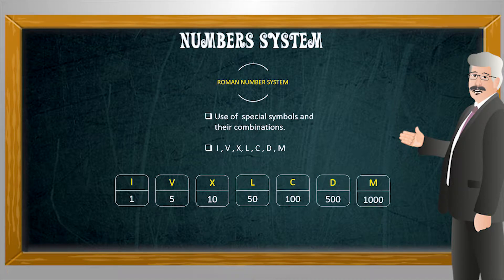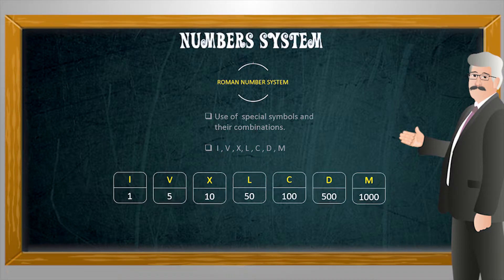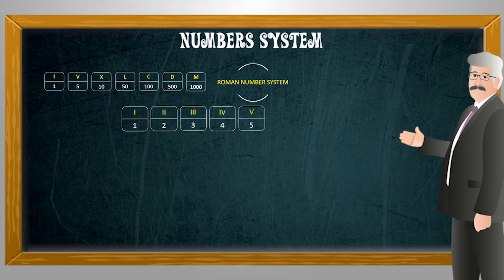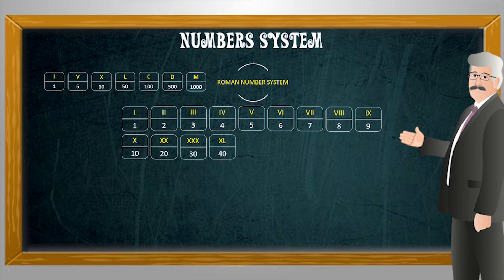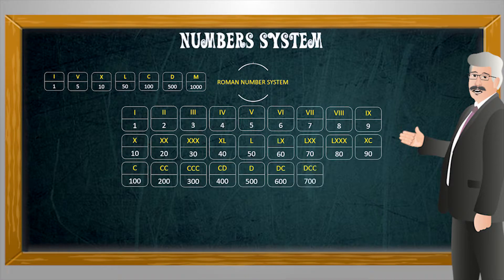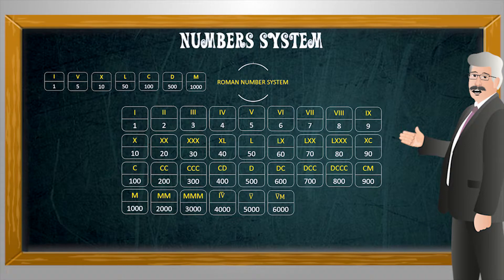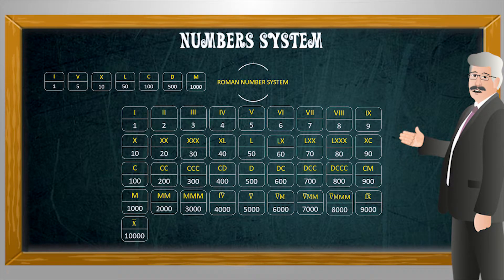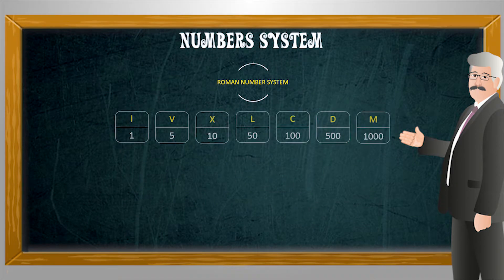Instead it uses special symbols and their combinations to represent any numeral. Let's look at these special symbols and their values. Here these seven symbols form the foundation of Roman numerals and other Roman numerals are formed by the combination of these special symbols.